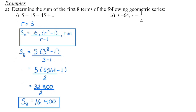So we can substitute in here: term 1 is 5, and we have a common ratio of 3 to the power of 8, minus 1. So then we can work out 3 to the power of 8, subtract 1, multiply by 5, divide by the denominator, and we've got the sum of the first eight terms.